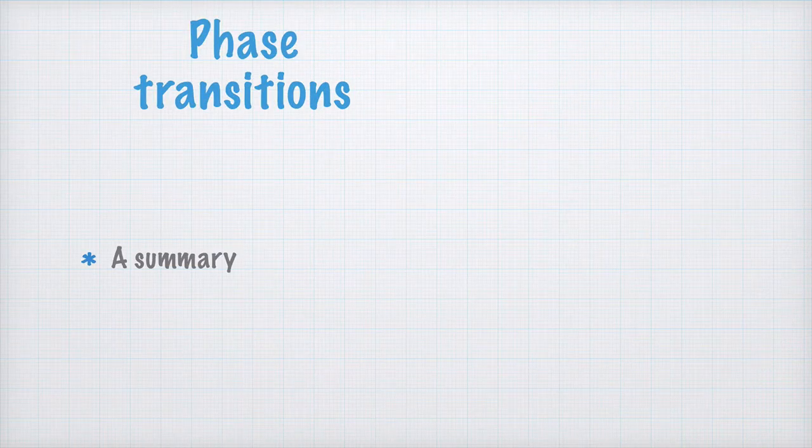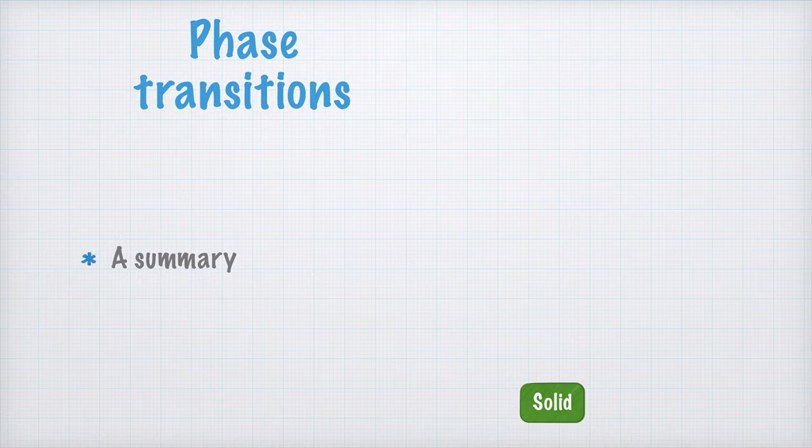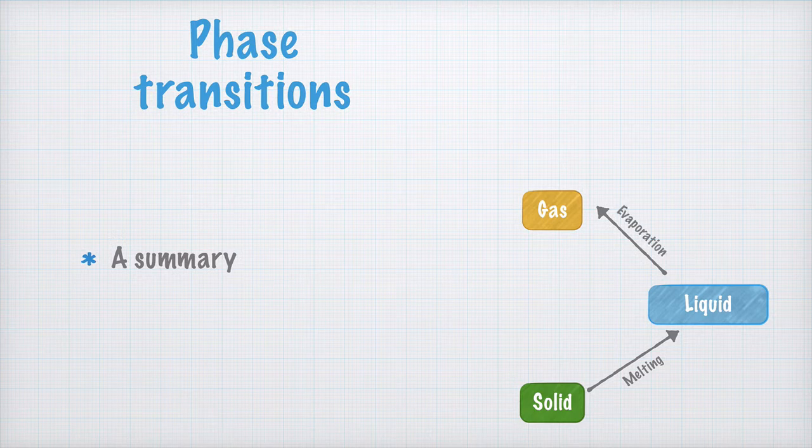Now, let's summarize the phase transitions in a nice little picture, so come along and write this too. Down here, we write that we have a substance in its solid form. If it transitions to liquid, it's called that it melts. Nothing peculiar about that. If it transitions further, to gas, it's called evaporation.